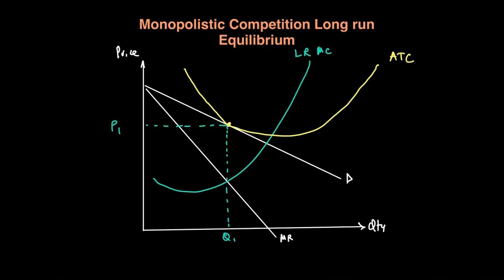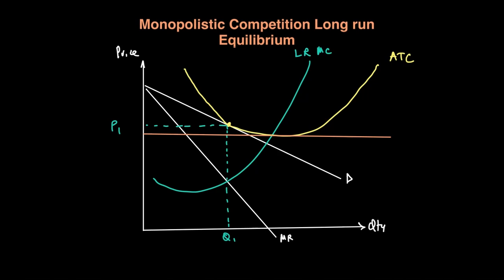If we draw a perfect competition diagram over this diagram, a completely horizontal demand curve represents the perfectly competitive firm. Perfect competition will produce at the point where ATC is at its lowest, so the quantity produced will be Q2 and the price will be P2. Monopolistic competition produces at point X where MC equals MR, while perfect competition produces at point Y where price equals MC and ATC is at its lowest. Both have zero profit, but under perfect competition firms produce more output at a lower price.